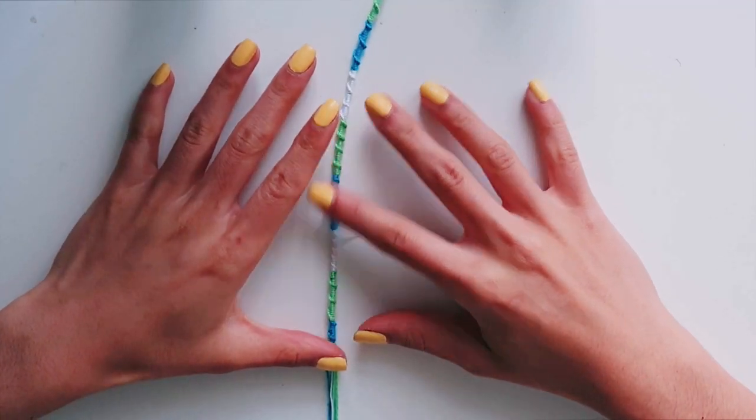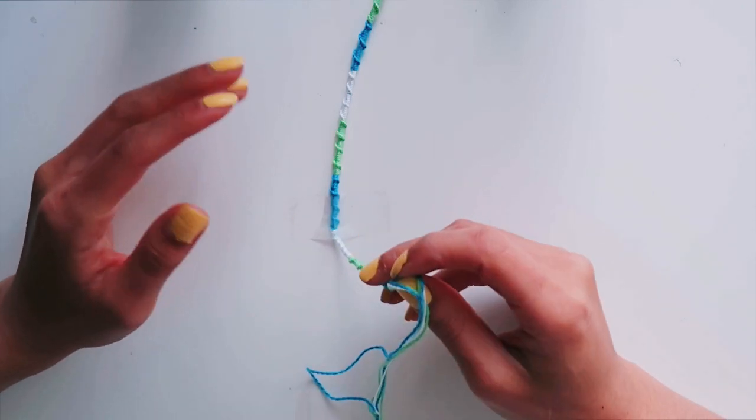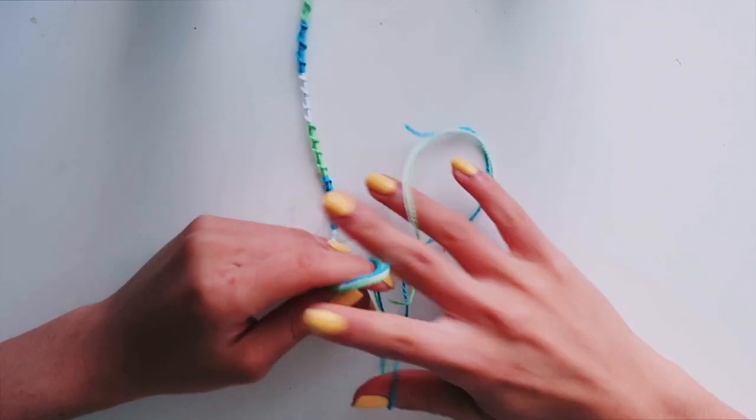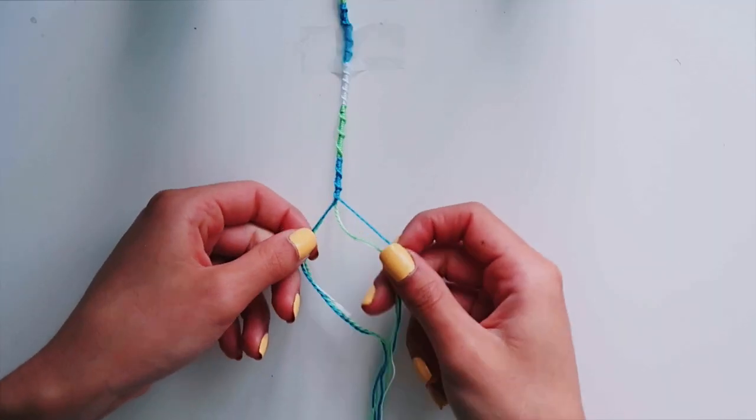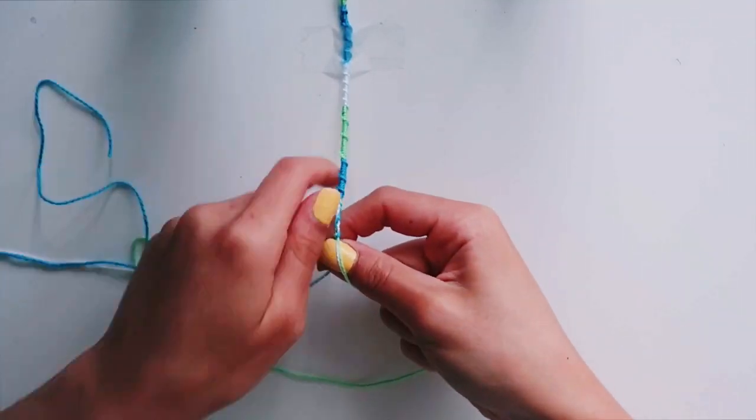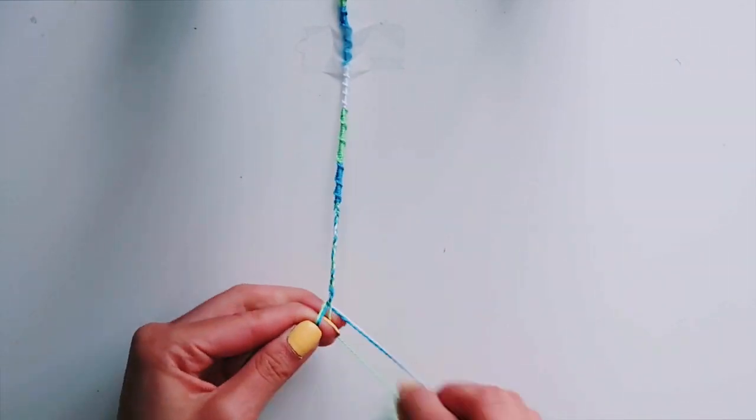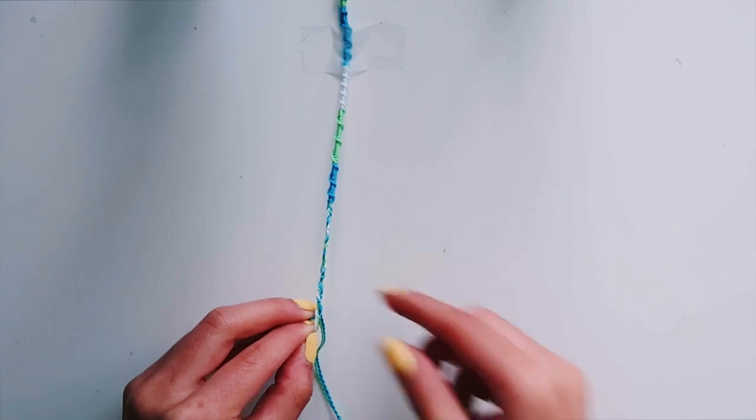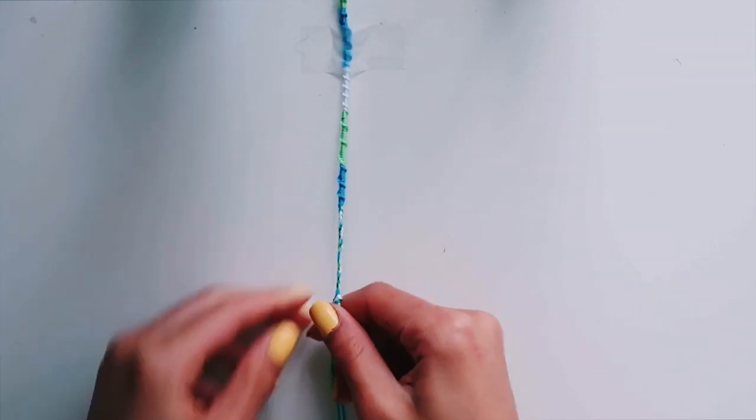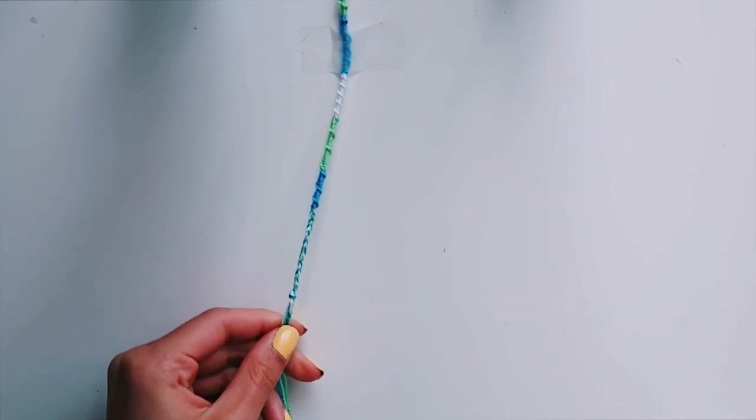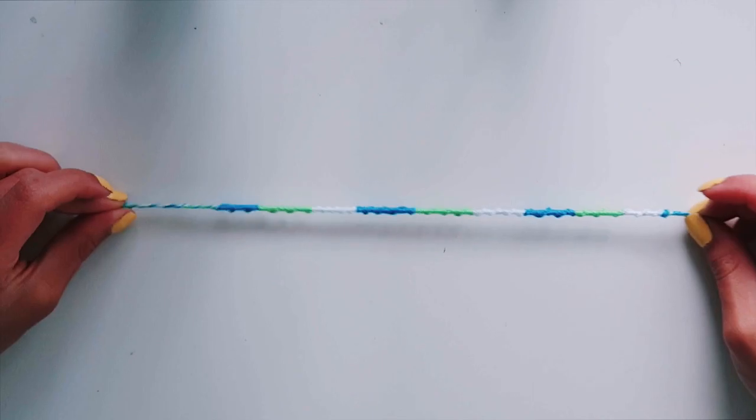So I'm just gonna show you guys how I end this. I end all my bracelets the same way. Just for the sake of time, I'm only gonna show you on this one. All I do is once I get to the end, I just do a normal braid. And then once it's a couple of inches, I'll just tie it and then I just cut off the end. That is what I would say is the easiest bracelet.